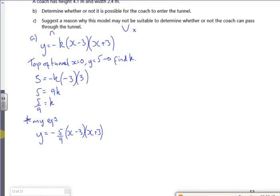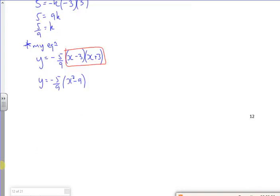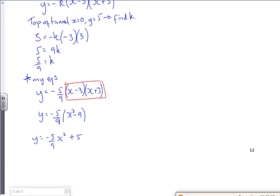There we go. I can expand it. So minus 5 over 9, this bit here is the difference of two squares, so that's just x squared minus 9. And then if I expand the bracket even more, I get minus 5 over 9 x squared, and then a minus 5 over 9 times by minus 9, so plus 5. That's my equation.